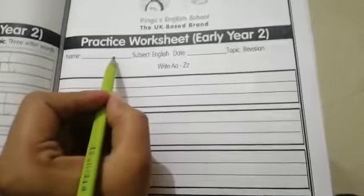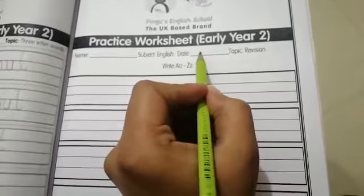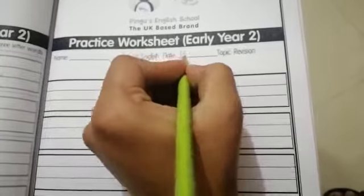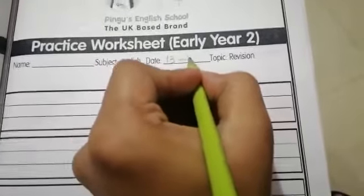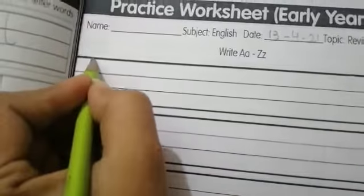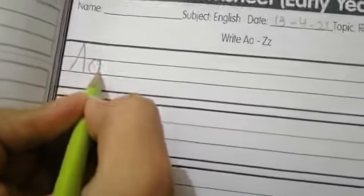Now moving forward to our worksheet, let's start our work. First write your name and date. What is the date today? Today is 13th April 2021. First write mommy letter A, then baby letter A.